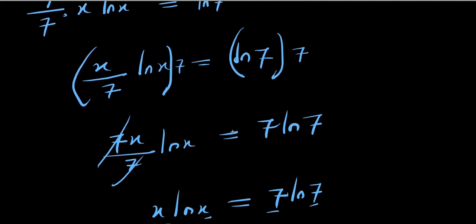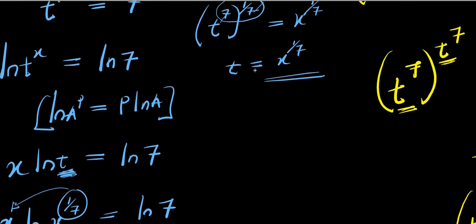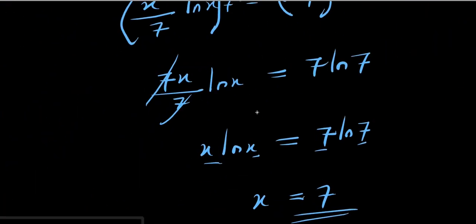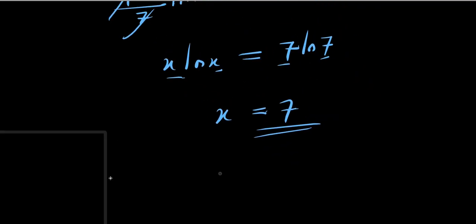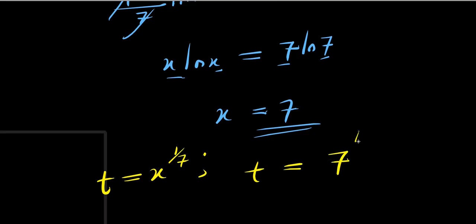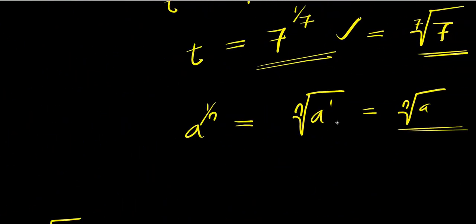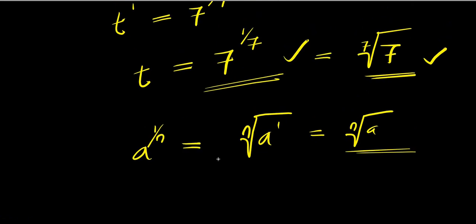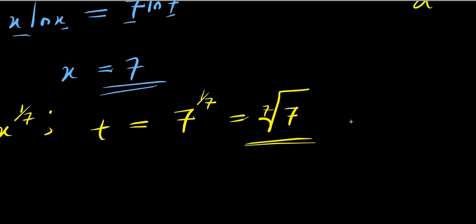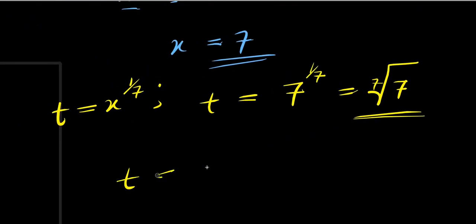Recalling that t equals x to the power of one over seven, and since x equals seven, we have t equals seven to the power of one over seven, which is the seventh root of seven — the same answer as what we found earlier. Both methods give us the seventh root of seven.